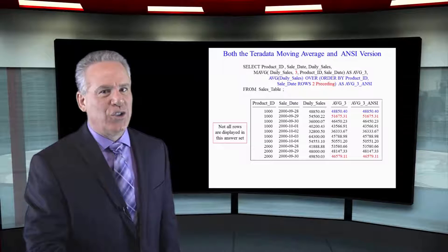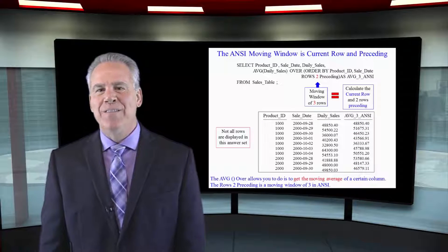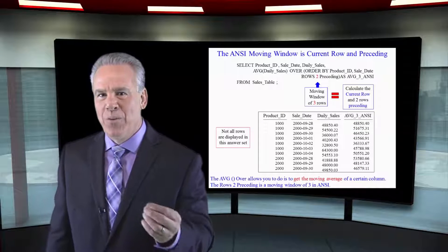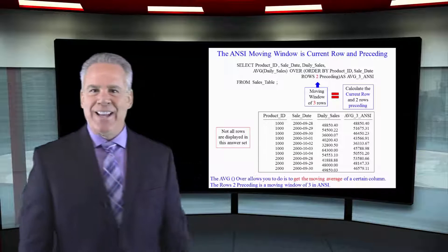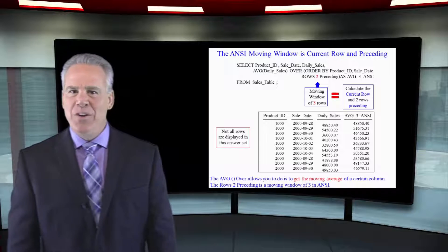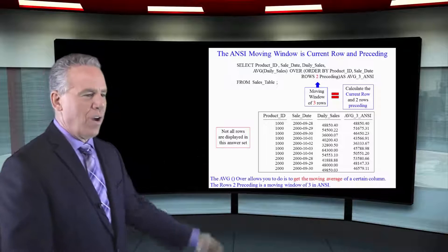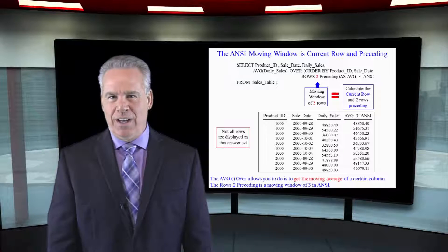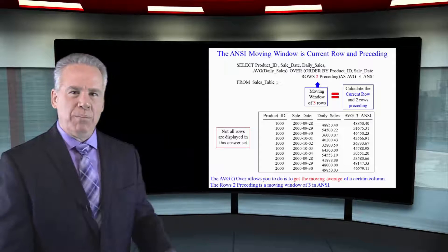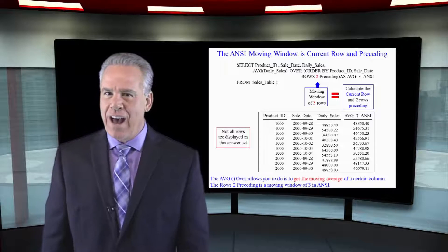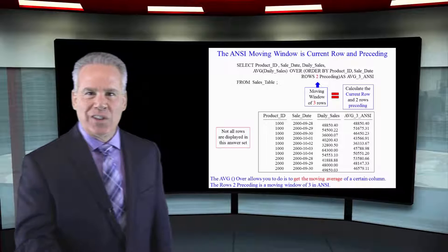I'll bet you got that. Good job. Once again, focus on my moving window: rows 2 preceding. That's a moving window of three. Just remember that — you're going to calculate the current row and the two rows preceding. What would that rows preceding be on a 65-day moving average? 64.